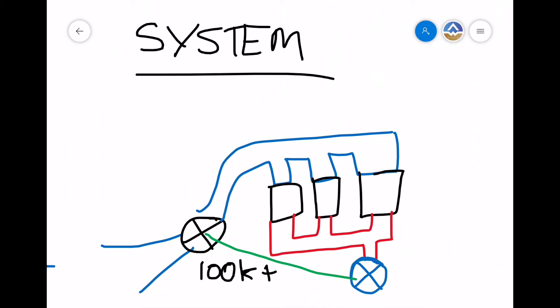As the turbine wheel spins, it drives this compressor wheel over here. And that compressor wheel is what compresses our air.